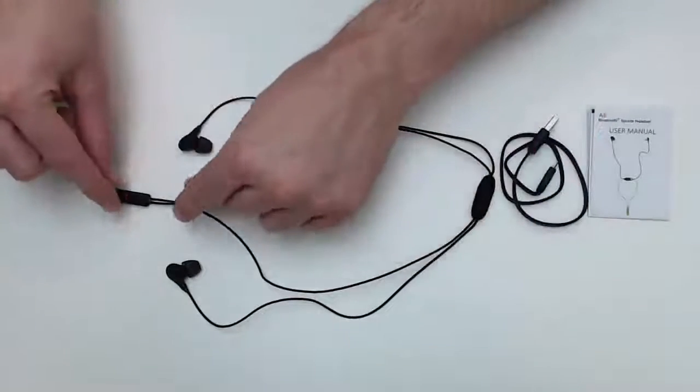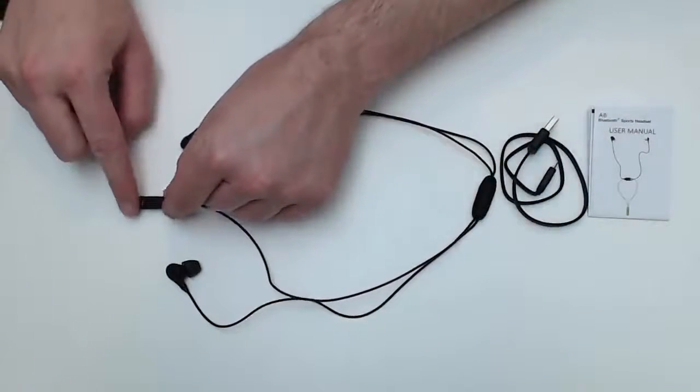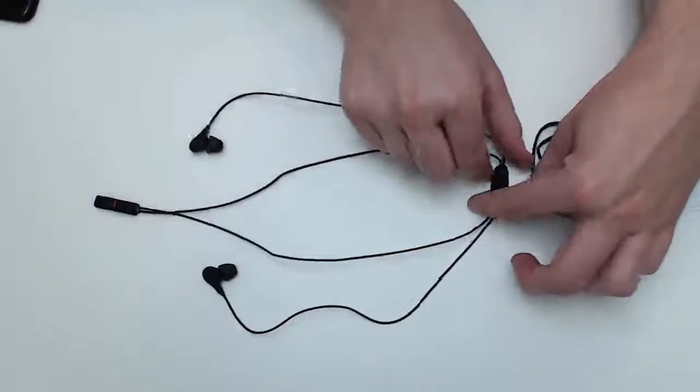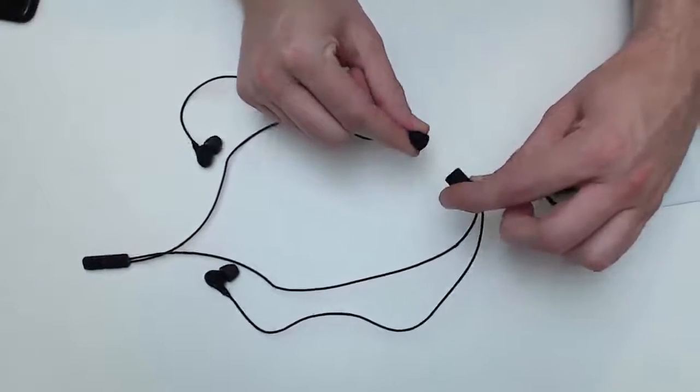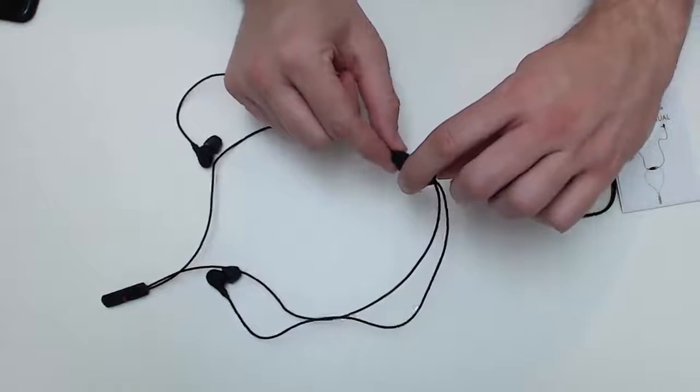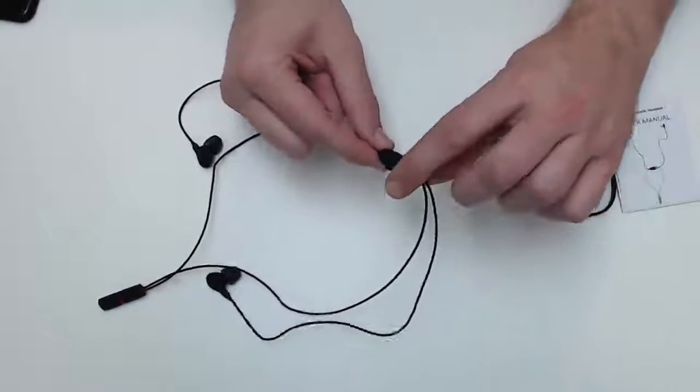And then that kind of sits on your chest as a necklace. This comes up and around. This piece here is actually two pieces with a magnet that attracts to the other side and then locks in place, which is kind of cool.